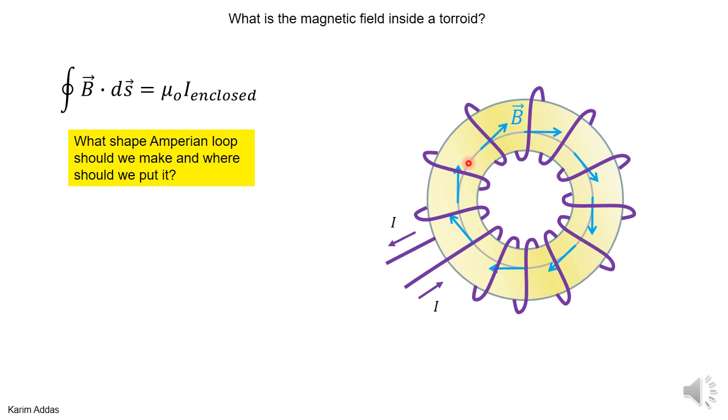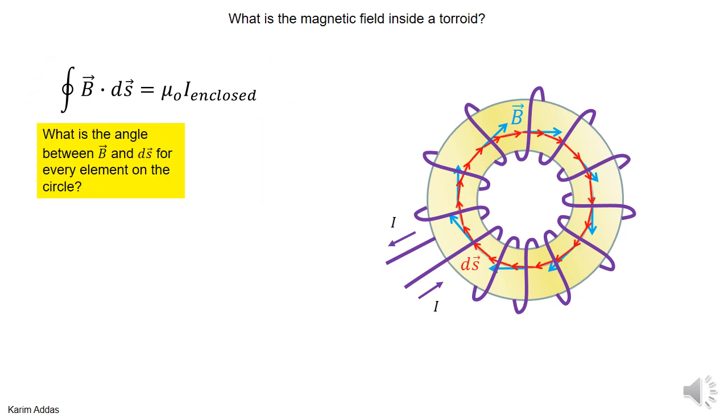So the question is, what shape Amperian loop would we take and where would you put it to solve this problem using Ampere's law?